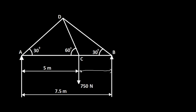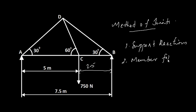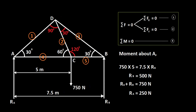We are going to analyze this through the method of joints. I mentioned in the previous video that there are two methods: method of joints and method of sections. In this video we are dealing with method of joints. You need to find the reactions and also the member forces — members AD: 1, 2, 3, 4, and 5 members, 1, 2, 3, 4 joints, and a 750 Newton force.